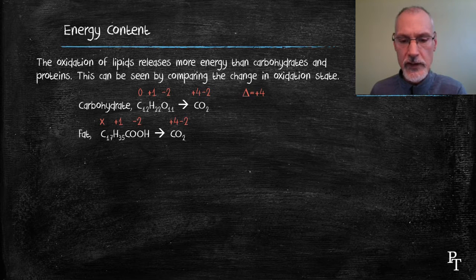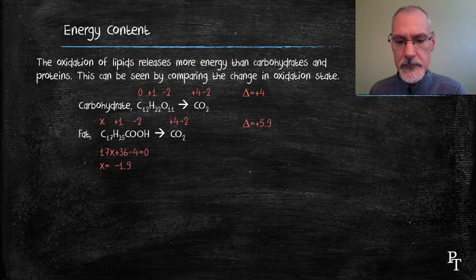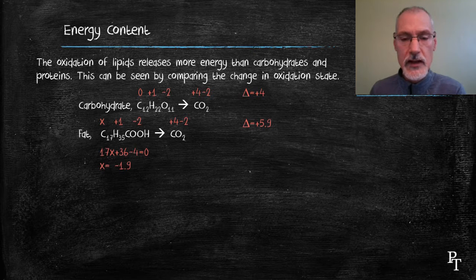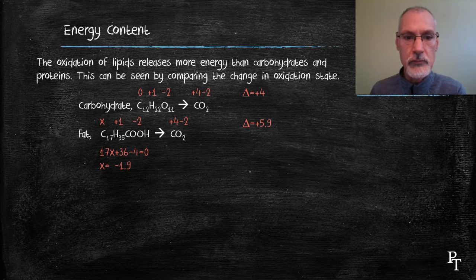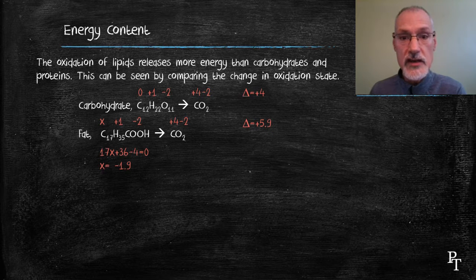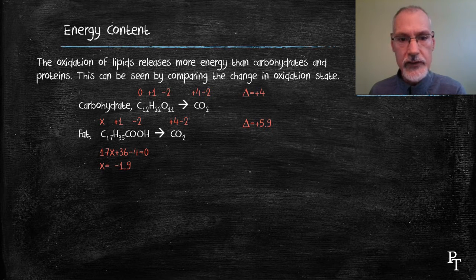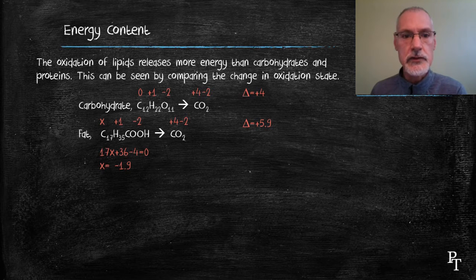I'll let the initial oxidation state be X, set up a little algebraic expression, and solve for X. In this particular case, the oxidation state goes from minus 1.9 to plus four — a change of plus 5.9. This bigger change in oxidation state corresponds to a greater release of energy.